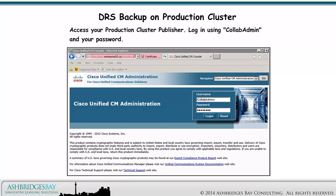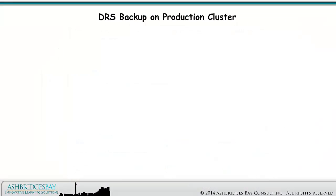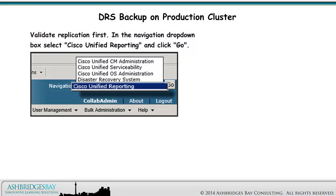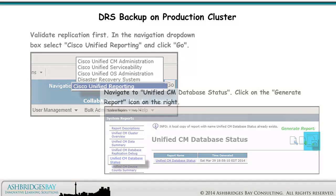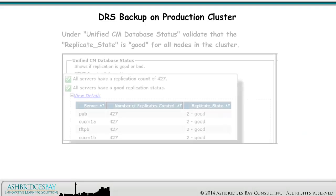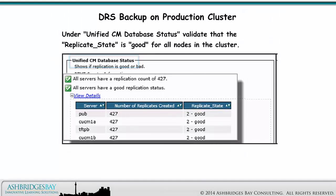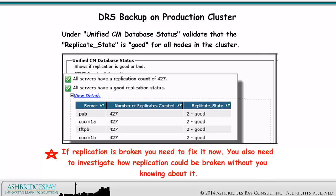Access your Production Cluster Publisher and log in using Collab Admin and your password. Validate replication first: in the Navigation drop-down box, select Cisco Unified Reporting and click Go. Navigate to Unified CM Database Status and click on the Generate Report icon on the right. Under Unified CM Database Status, validate that the replicate state is good for all nodes in the cluster. If replication is broken, you need to fix it now, and you also need to investigate how replication could be broken without you knowing about it.